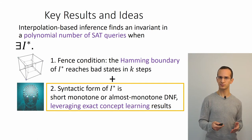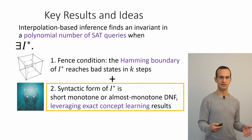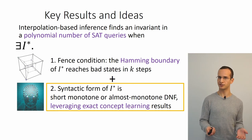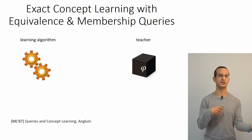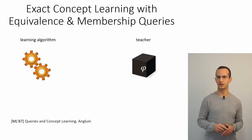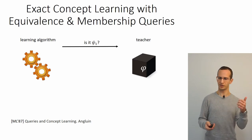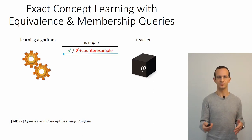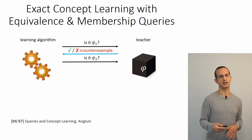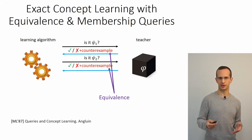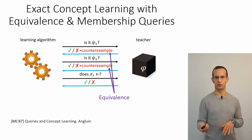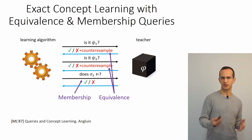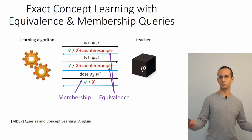We're going to answer this by leveraging ideas from exact learning theory. In this setting, the learner tries to identify an unknown formula phi by asking a series of questions. It can ask equivalence queries—is it psi 1?—and the teacher responds either yes or no with a differentiating counterexample. Another kind of query is a membership query—is sigma 3 a model of the unknown formula?—and the teacher responds yes or no. After a series of such queries, the algorithm identifies the unknown formula phi.